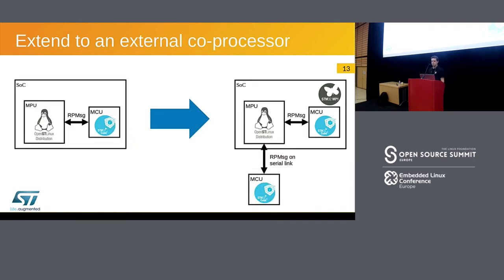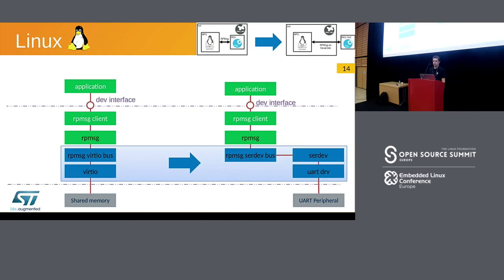Now, the transition from a multi-processor SOC solution to a multi-SOC solution. The concept here is to implement RPMessage over the serial link — migrating from RPMessage over virtio to RPMessage over a serial link. In this example we use a UART peripheral as the link. We propose replacing the RPMessage virtio bus implemented in the current generic Linux RPMessage solution with a new RPMessage SERDEV bus, giving the choice between the virtio solution or the SERDEV solution.